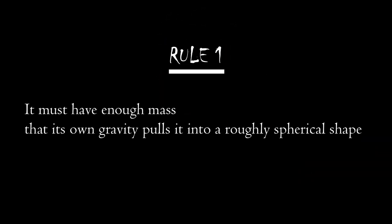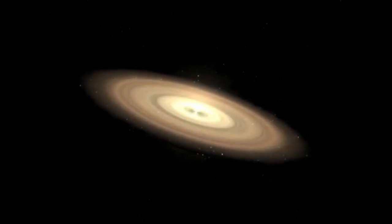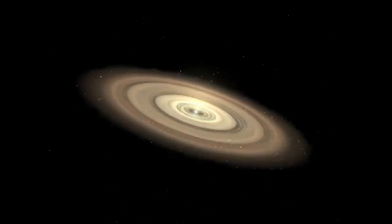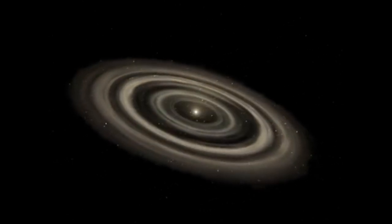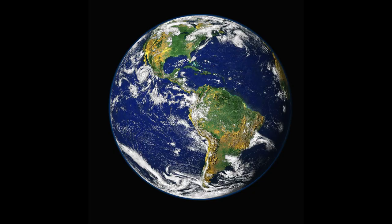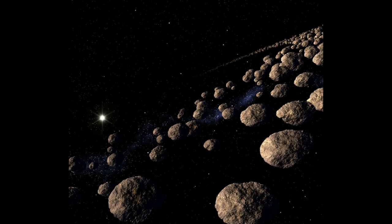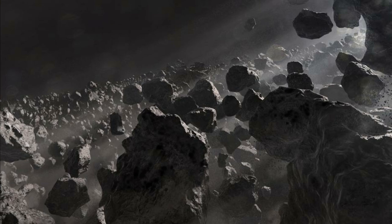If we consider one of the planets, we follow three rules. The first rule is that the object must have enough mass and gravity to pull itself into a round, elliptical form. But for asteroids, they do not meet this requirement — they lack sufficient mass and gravity.